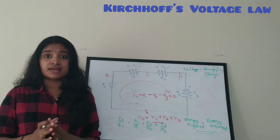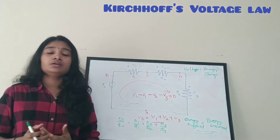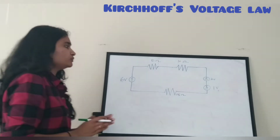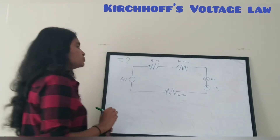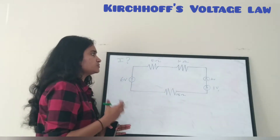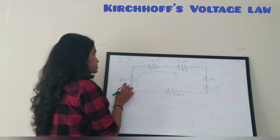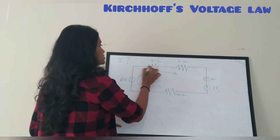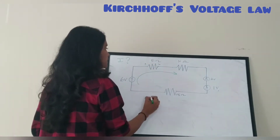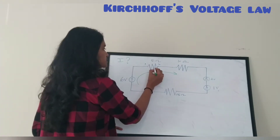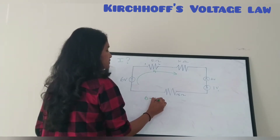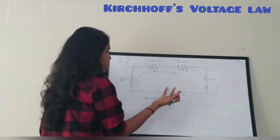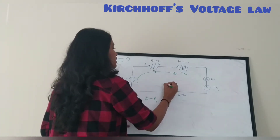Let us do a simple example of the type of problems from KVL. Here there is a closed loop with three resistors and three voltage sources. You have to find the current I present in the closed loop. First we will write the KVL or voltage equation for this closed loop. I am going to travel in this direction. I am considering the voltages across the 5-ohm, 10-ohm, and 15-ohm resistors as V1, V2, and V3 respectively.